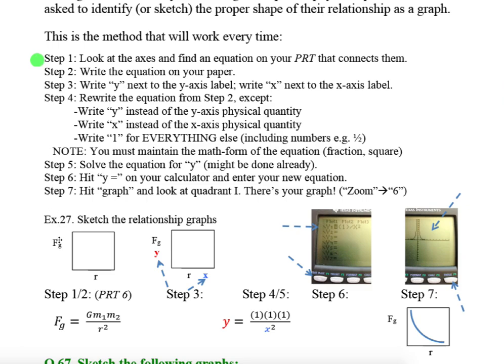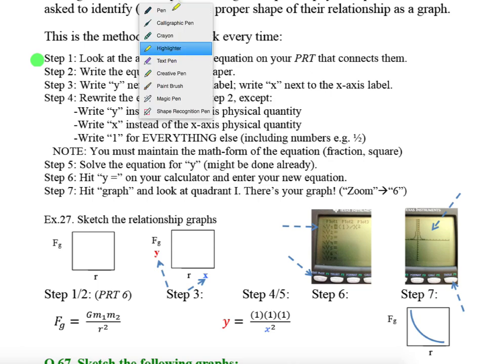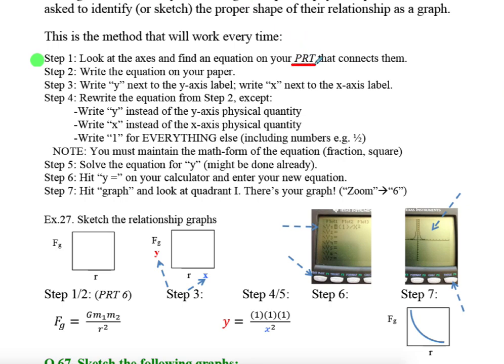So here are the steps. Now these steps work every time, and I will tell you based on history that the sooner you buy into this, the better. There are students in January who will say, wait a minute, we have a method? Yes we do, you learned it in September. Step one: look at the axes. This axis has F sub G and it has R. You want to find an equation on your reference table that connects them.